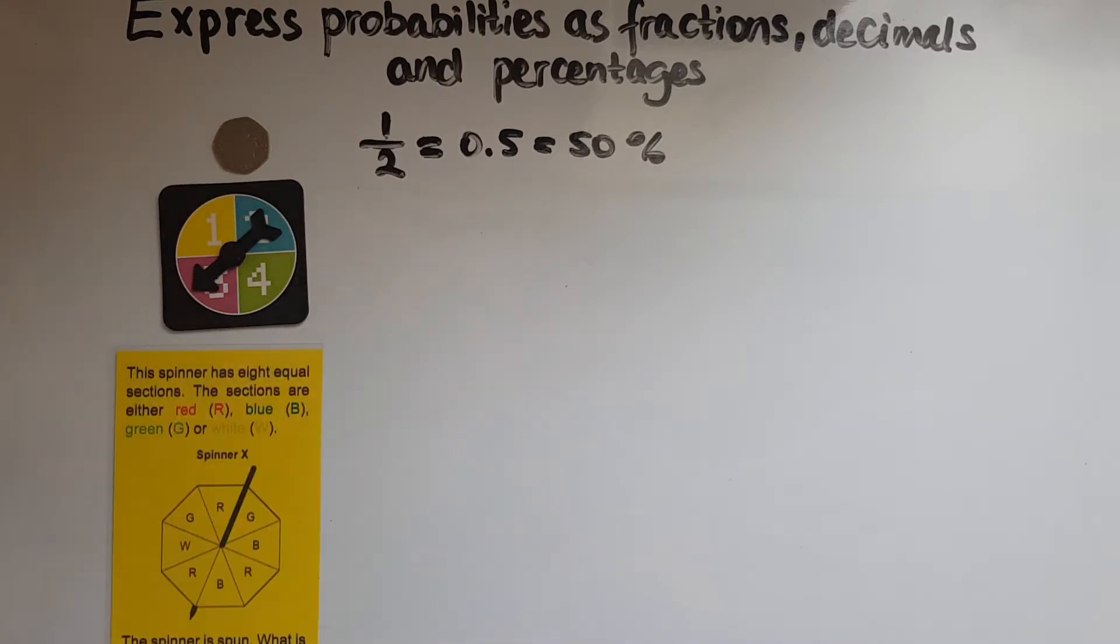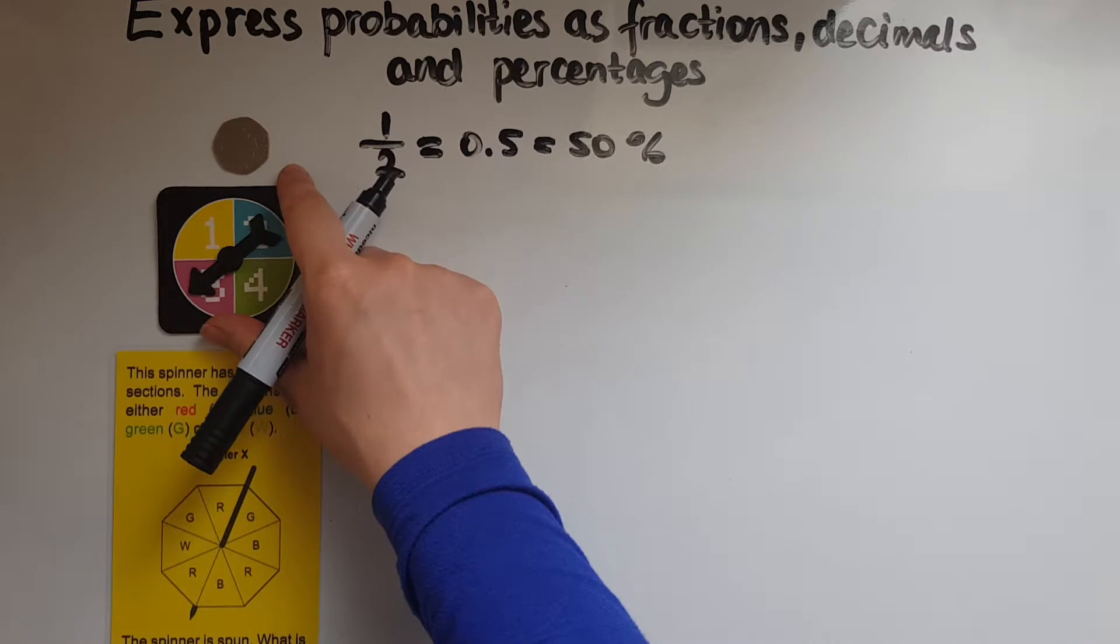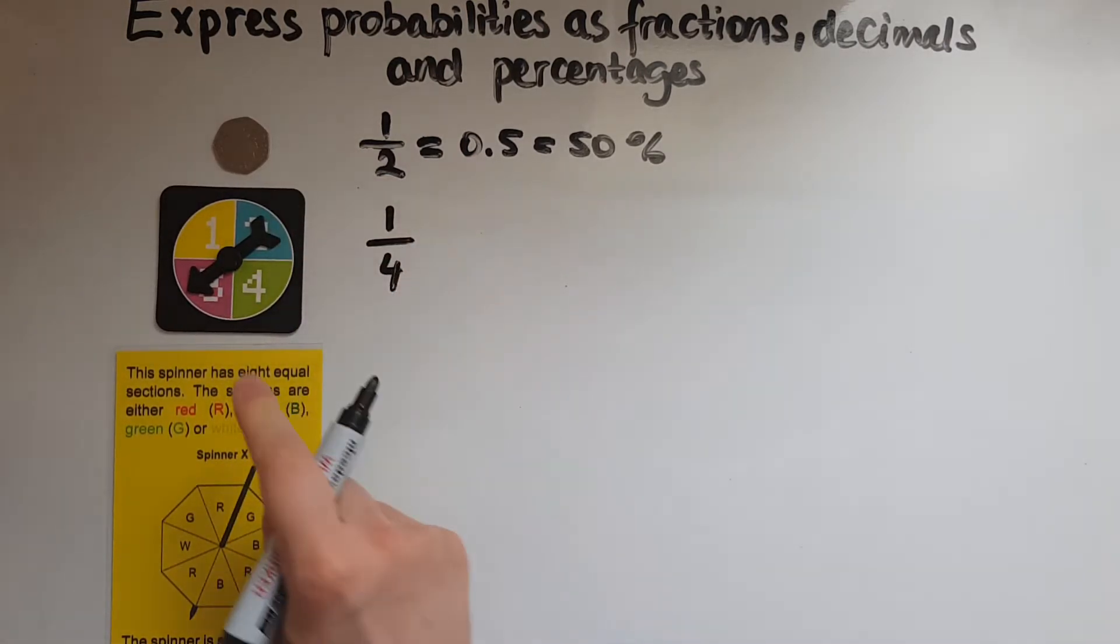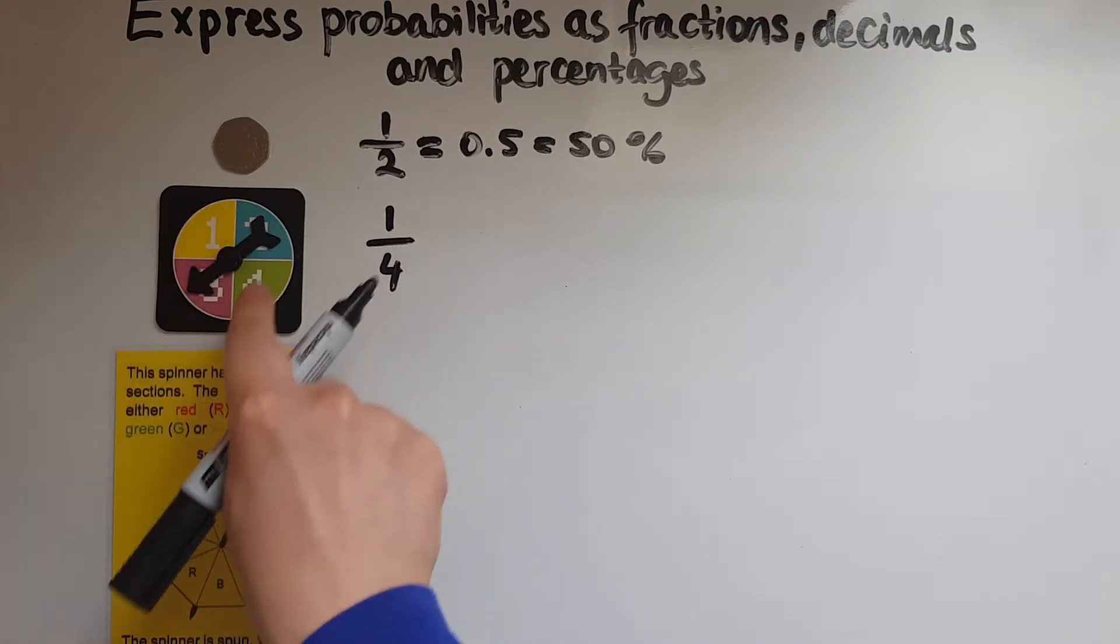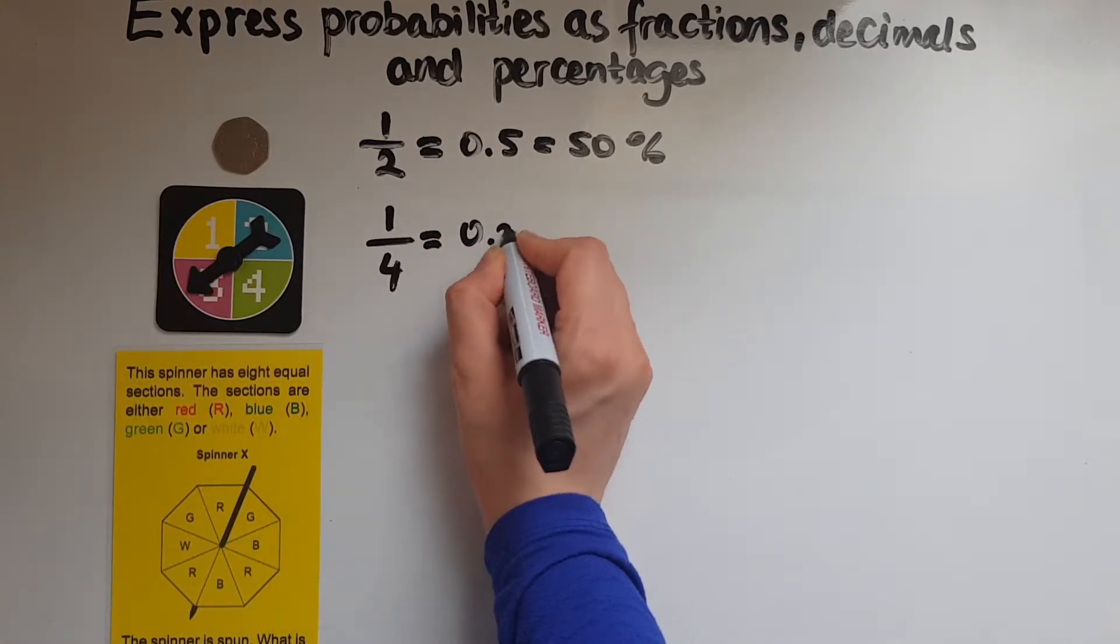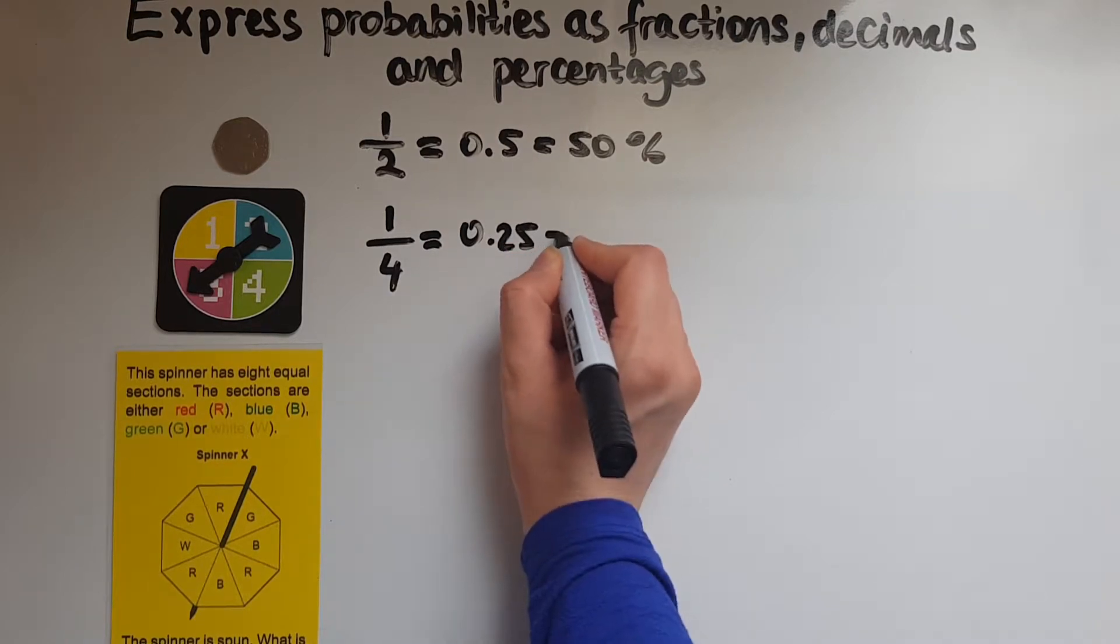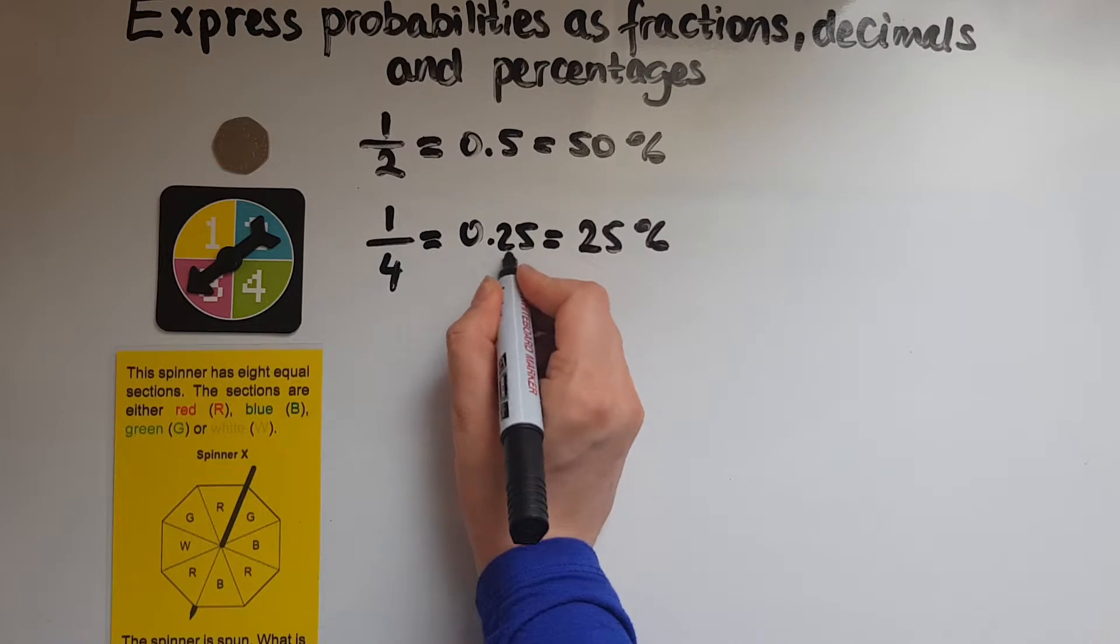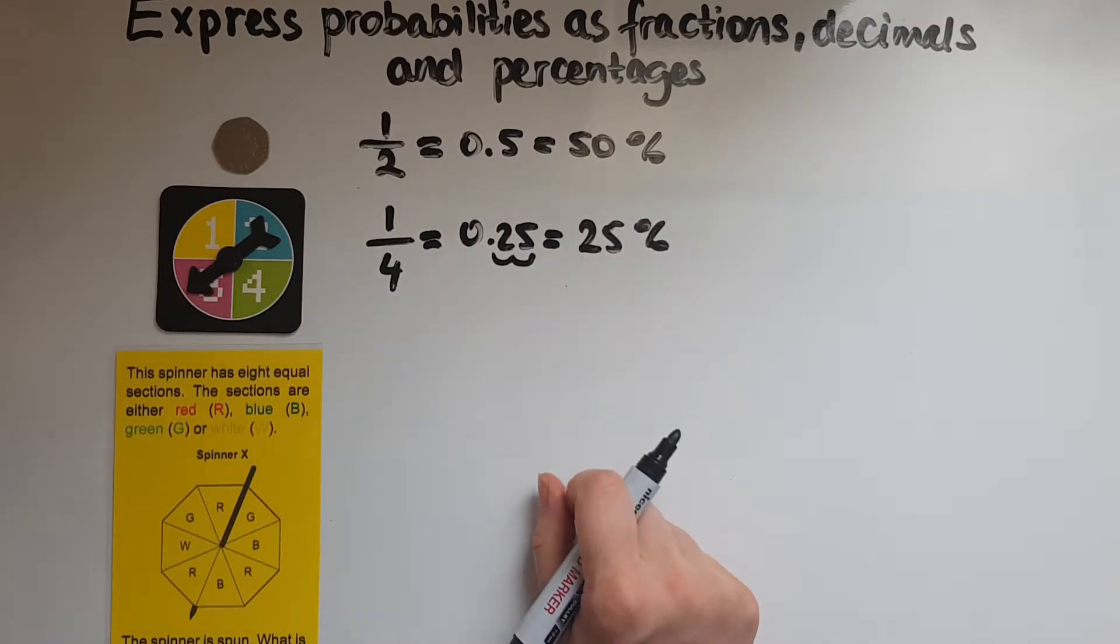The probability of getting a 3, for example, in the spinner is 1 out of 4 or 1 quarter because it's one of the possible four. So 1 divided by 4 gives us 0.25 and that is 25%.